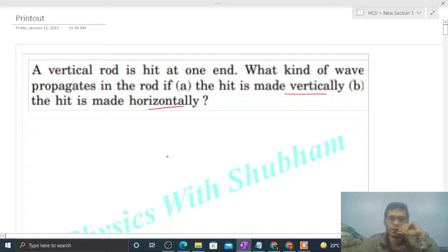The question has a vertical rod, and with the help of a hammer or something we are hitting one end of the rod. Case A: when you are hitting vertically, something like this. Case B: when you are hitting it horizontally. So what kind of waves will generate?